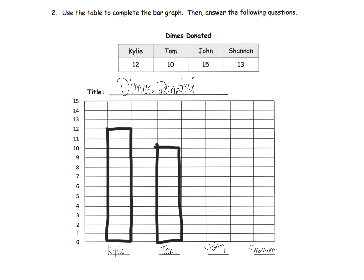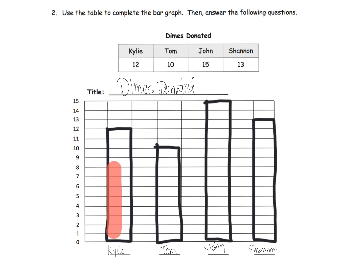Tom is 10, so his is right here, and again it's perfectly lined up with that 10. John is 15, so he's way at the top—John with 15. And then Shannon with 13, right here.